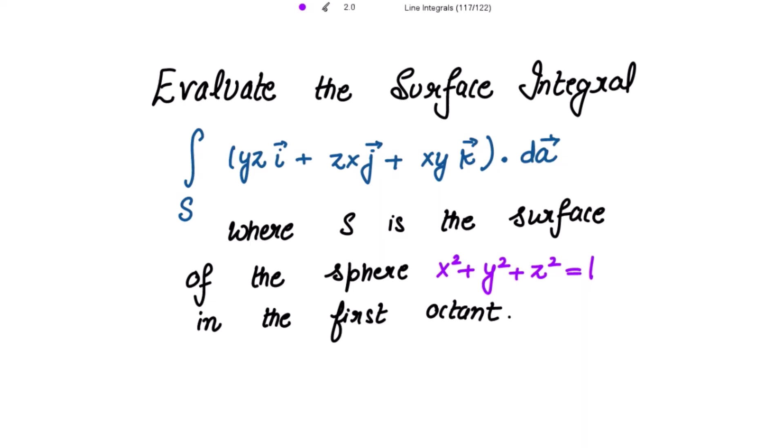Evaluate the surface integral of the dot product of yz i-vector plus zx j-vector plus xy k-vector with dA vector, where S is the surface of the sphere x² + y² + z² = 1 in the first octant. First octant means theta lying between 0 to π/2 and phi lying between 0 to π/2.